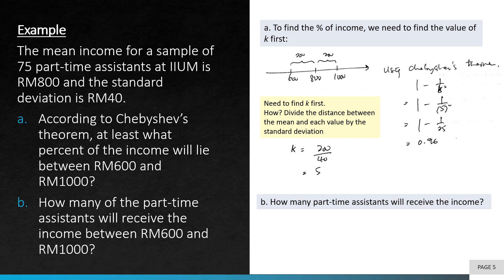For the second part, how many of the part-time assistants will receive this amount, all we need to do is simply multiply the 96% from the total number of part-time assistants. 96% times 75, so we'll get 72 part-time assistants.